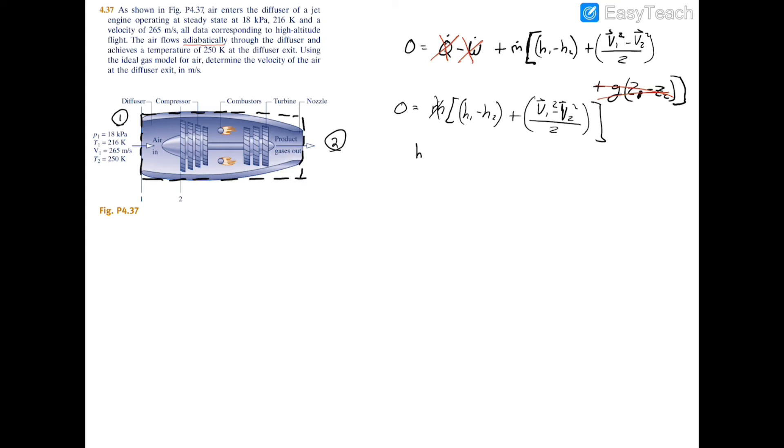I'm going to try to isolate for the velocity. Bring the enthalpies to the other side: h2 minus h1 equals v1 squared minus v2 squared divided by two. Now if you multiply both sides by two we can get rid of the division on the right side. Now subtract v1 squared from both sides, multiply by negative one, and take the square root. You're going to have two times h2 minus h1 minus v1 squared equals negative v2 squared. Multiply both sides by negative one, take the square root: square root of two times h1 minus h2 plus v1 squared. Now you have your equation to find your v2 velocity.